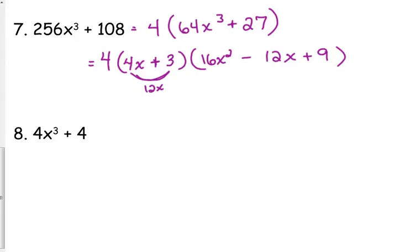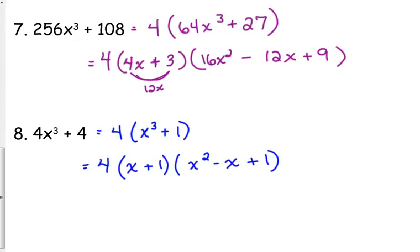Let's do one more like that. 4x cubed plus 4. 4 is not a perfect cube. Well, guess what? The GCF is 4. When we take out the 4, we're left with x cubed plus 1. And I'm pretty sure we just factored this a second ago. We've got x plus 1 times x squared minus x plus 1. I think we just had a different variable.